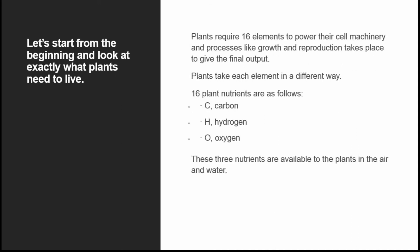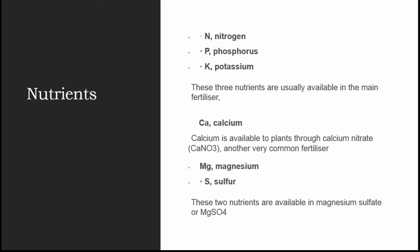Let's look at exactly what plants actually need. Plants require 16 elements to power their cell machinery and processes like growth and reproduction that takes place to give the final output. Plants take each element in a different way. The 16 plant nutrients are as follows: carbon, hydrogen, and oxygen — these three nutrients are available to plants in the air and water. The next are nitrogen, phosphorus, and potassium.